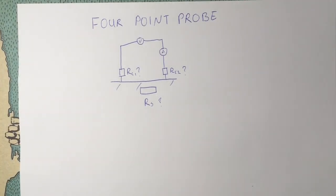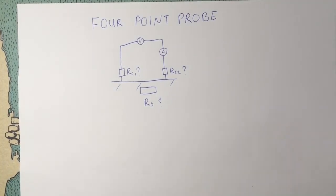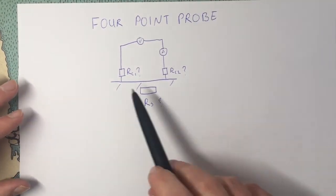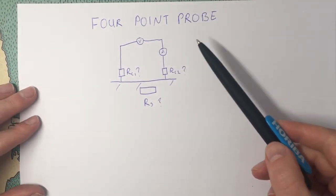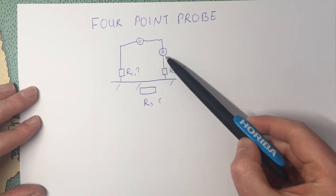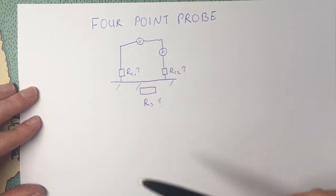So how can we overcome that? Well, we can use something called a four-point probe where we are going to separate the voltage and current part of this measurement.